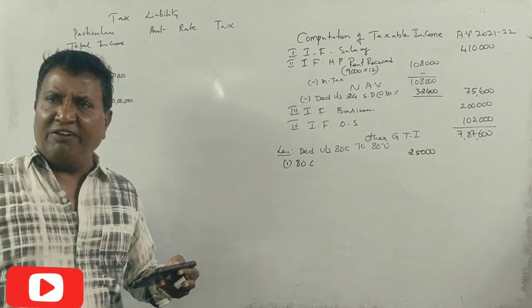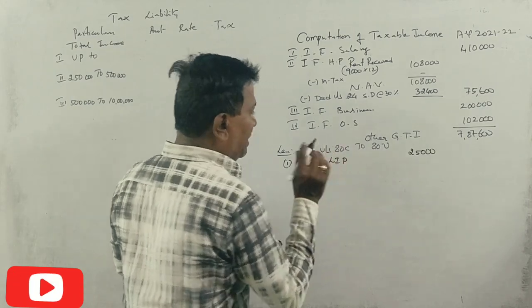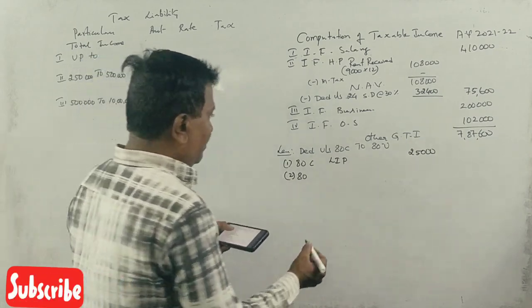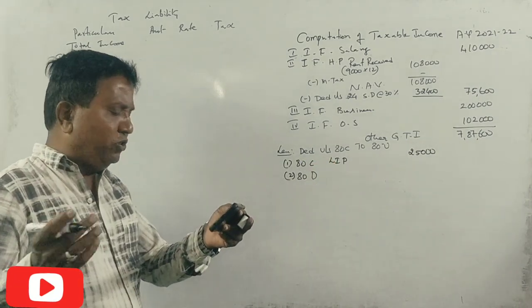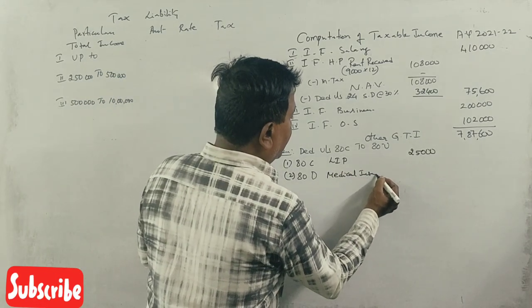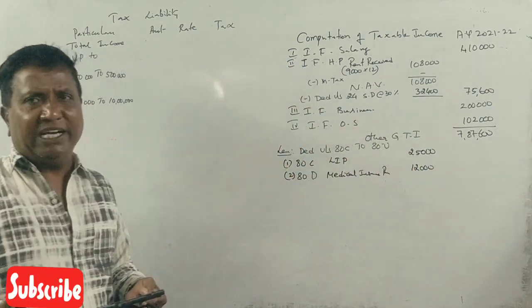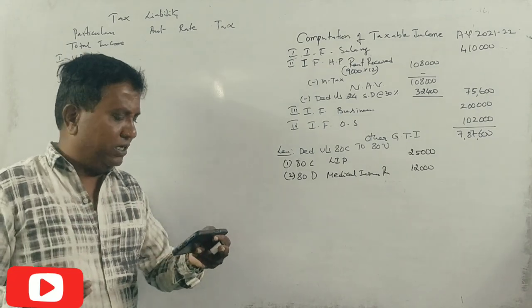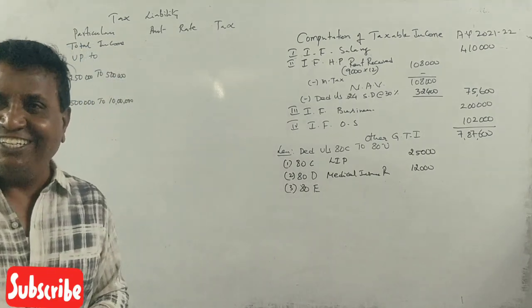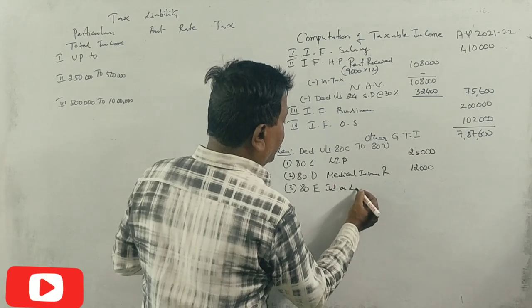Under Section 80D, medical insurance premium. Medical insurance premium is 12,000, which is less than 25,000. So the entire 12,000 is allowed deduction.